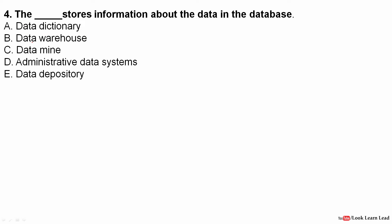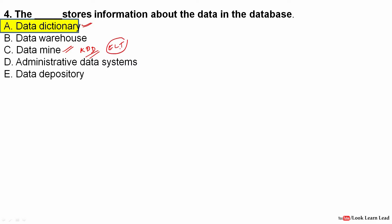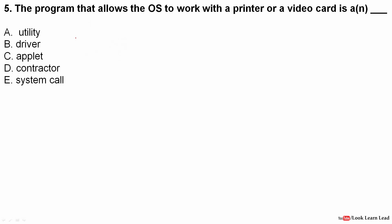The next question: Dash stores information about the data in the database. The answer is data dictionary — it stores all the metadata information of the database. Data mining is a knowledge discovery process, also called Knowledge Discovery in Databases (KDD), and it involves Extract, Load, and Transform operations. So the answer here is data dictionary.